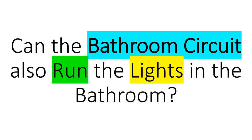Hey everyone, welcome back. I am the Electrical Code Coach. Today we're going to look at the age-old question: can the bathroom circuit also run the lights inside the bathroom? Does a bathroom require its own circuit, or can I just run it off of anything? And when I'm dealing with the receptacle inside that bathroom, am I also allowed to run the lights off of that, or run other receptacles or other pieces of equipment? Let's jump into it.